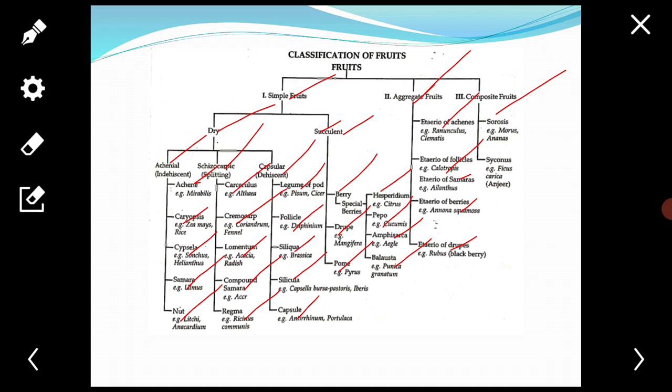Next, that is the etaerio of follicles. In these type fruits, they may consist of two, example Calotropis, Cryptostegia; three, example Aconitum; and many follicles, example Michelia.